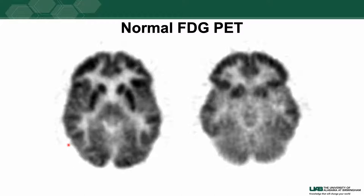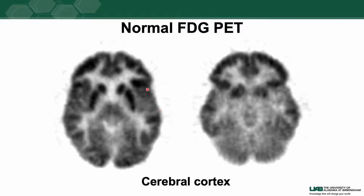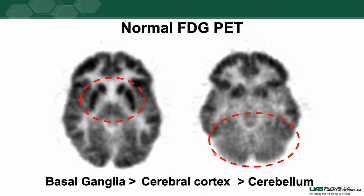An axial slice at the level of the basal ganglia and an axial slice at the level of the lower brain where you can see the cerebral cortex and the cerebellum. We usually follow the rule of 10 when evaluating the level of activity in the brain. If you take the cerebral activity as 100, the activity in the basal ganglia is about 10 percent higher than the cerebral activity.